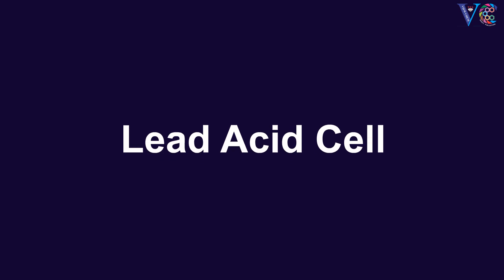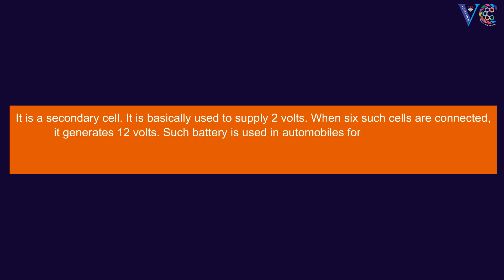Lead Acid Cell. It is a secondary cell, basically used to supply 2 volts. When six such cells are connected, it generates 12 volts. Such battery is used in automobiles for power supply.